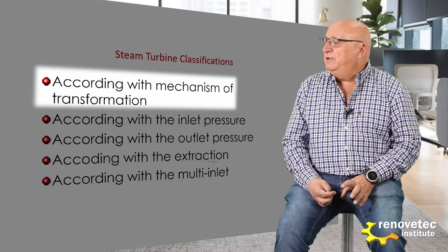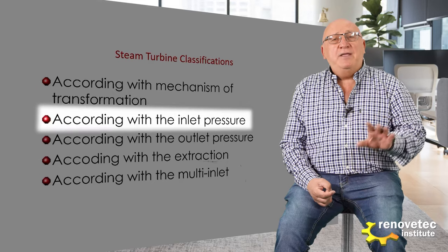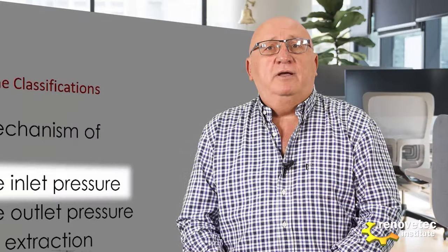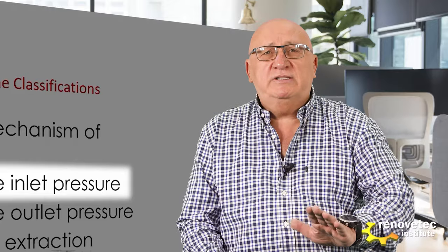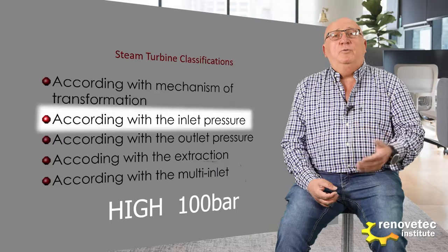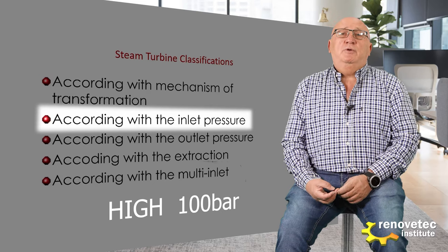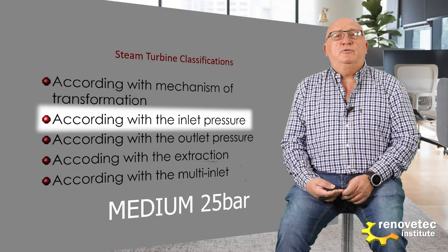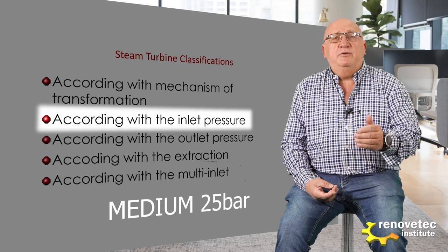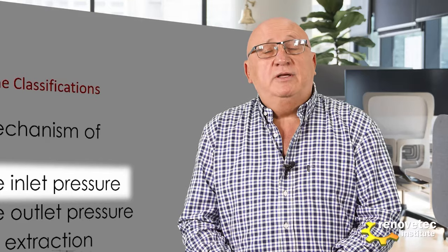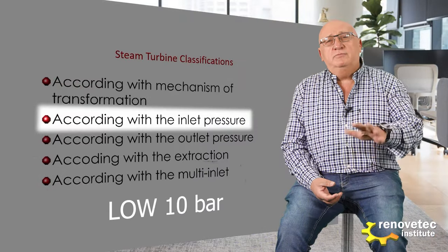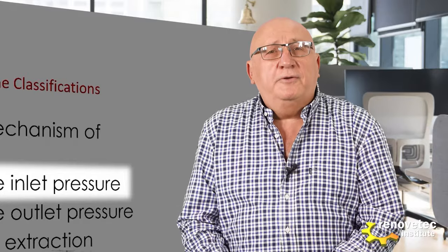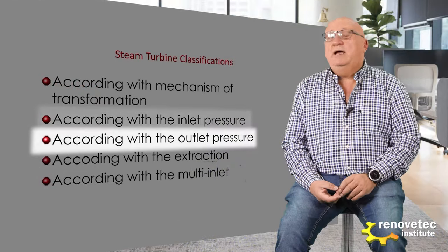The second classification is according to the inlet pressure. We have high pressure turbine, medium pressure turbine, and low pressure turbine. When the pressure is around 100 bar or more, we talk about high pressure turbine. When the pressure is around 25 bar, we talk about intermediate pressure or medium pressure turbine. And finally, when the inlet pressure is around 10 bar or less, we talk about low pressure turbines.